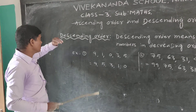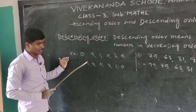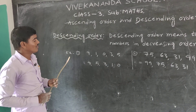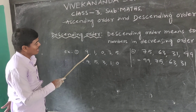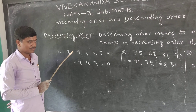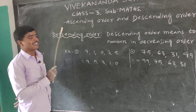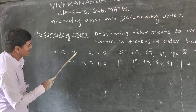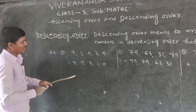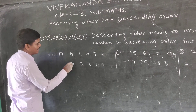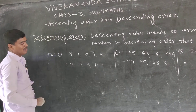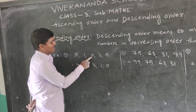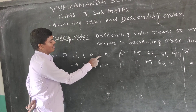Descending order means big to small. All are one-digit numbers. The biggest number is 9. Write 9 first, cancel 9. Second biggest from 1, 0, 3, 5 is 5.